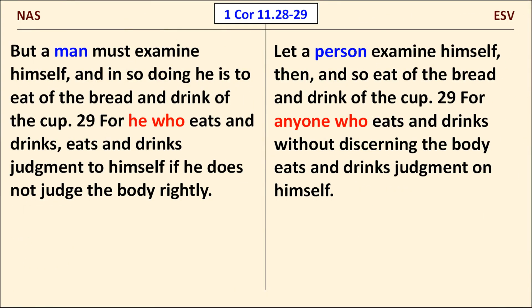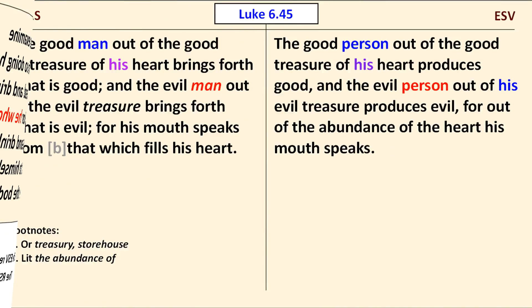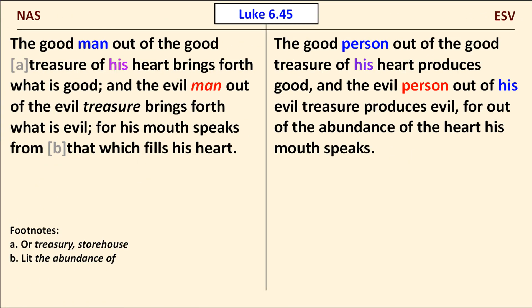Here in 1 Corinthians chapter 11, verse 28, we see two examples of the ESV taking a modern rather than a classic approach to gender inclusion. The RSV had man here, like the NAS. The ESV replaced that with person. But notice that the RSV had anyone who eats in verse 29 — that's the way it read back in 1946, the year Gloria Steinem turned 12. Let's look next at Luke chapter 6, verse 45. Here we see a disagreement over whether man or person is the best English word to use in the first sentence.